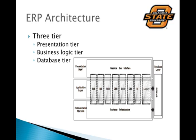The third layer is the database tier, the backend layer that contains the data repository. It holds all the organizational data needed for daily processing. The database management system (DBMS) manages the whole enterprise data, which is used for generating reports and making organizational decisions. The operating system may also be included in this layer.